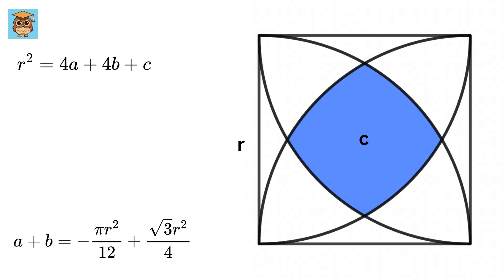Now this part is so nice because we do not need to find the value of a or b in order to find the value of c, because having the value of a plus b is simply enough. See this equation, c will be equal to r-square minus 4 times a plus b.